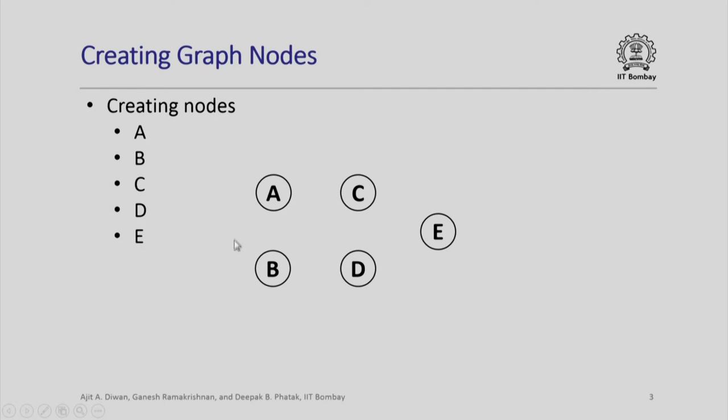Let us look at creation of graph nodes. We just want to collect information about how many nodes there are and how they are named. For example, here we show creation of nodes A, B, C, D, E as per our sample illustration that we saw last time.